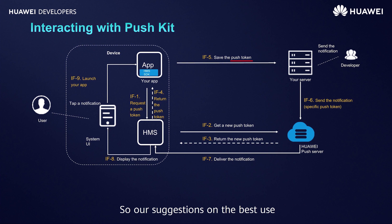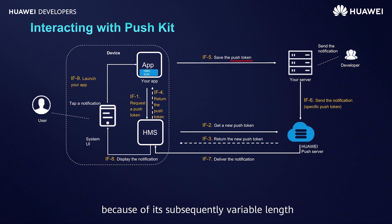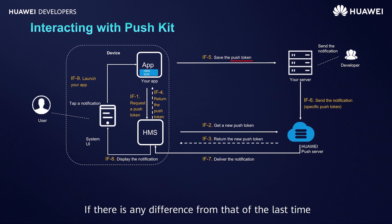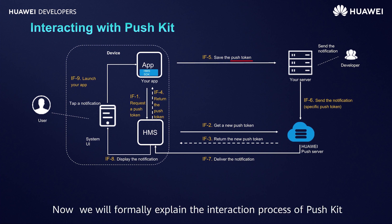Our suggestions on best use practice are: 1. Do not judge the length of the Push Token based on the app because of its subsequently variable length. 2. Push Token business should be updated regularly — it is recommended to obtain Push Token every time you start the app. If there is any difference from the last time, report the latest one to your server. 3. Do not use Push Token to trace or mark users.